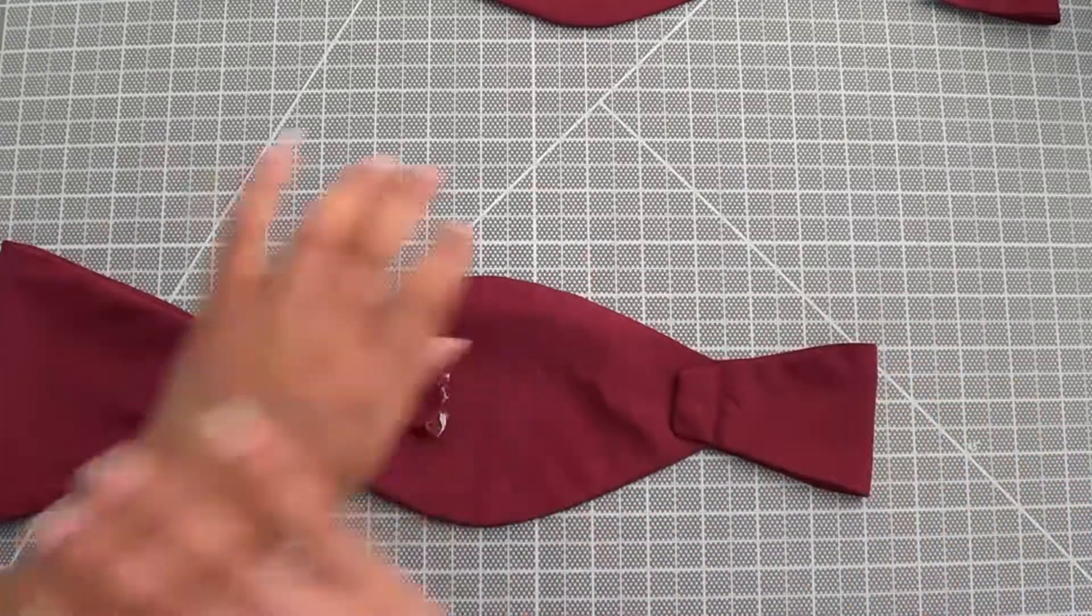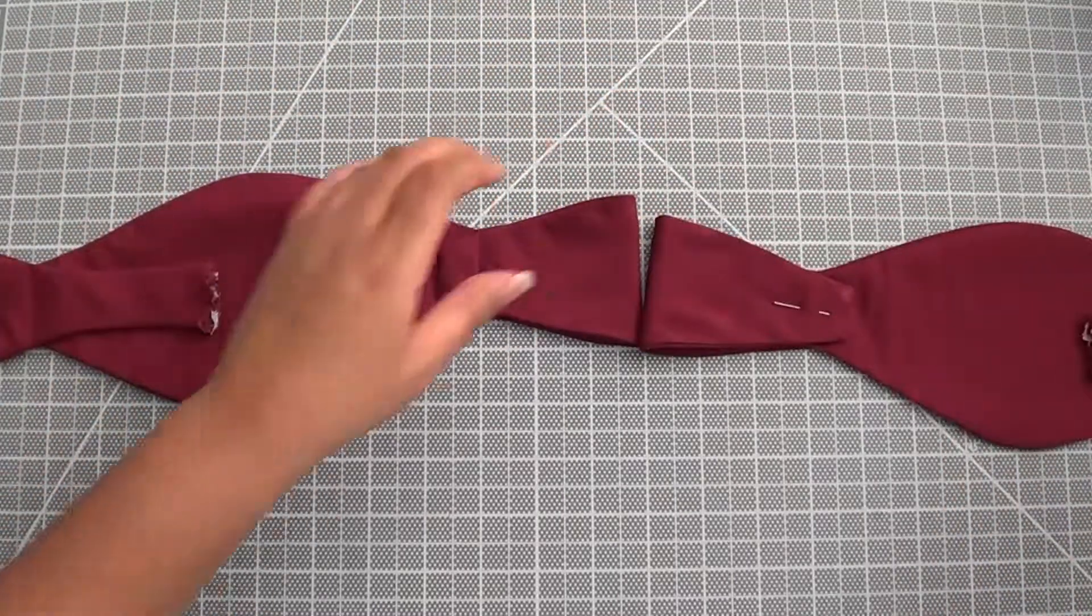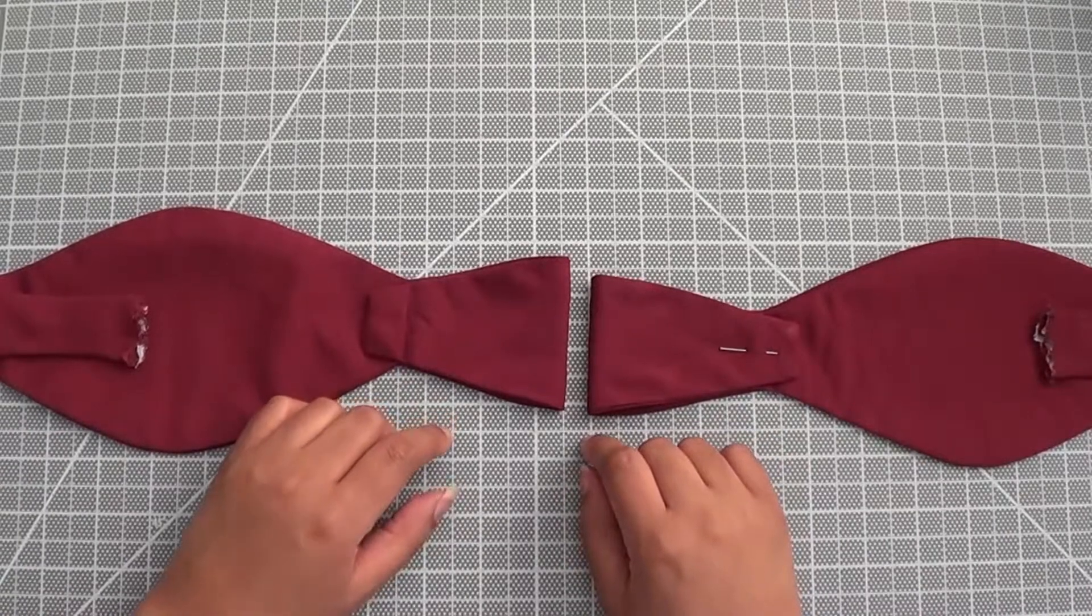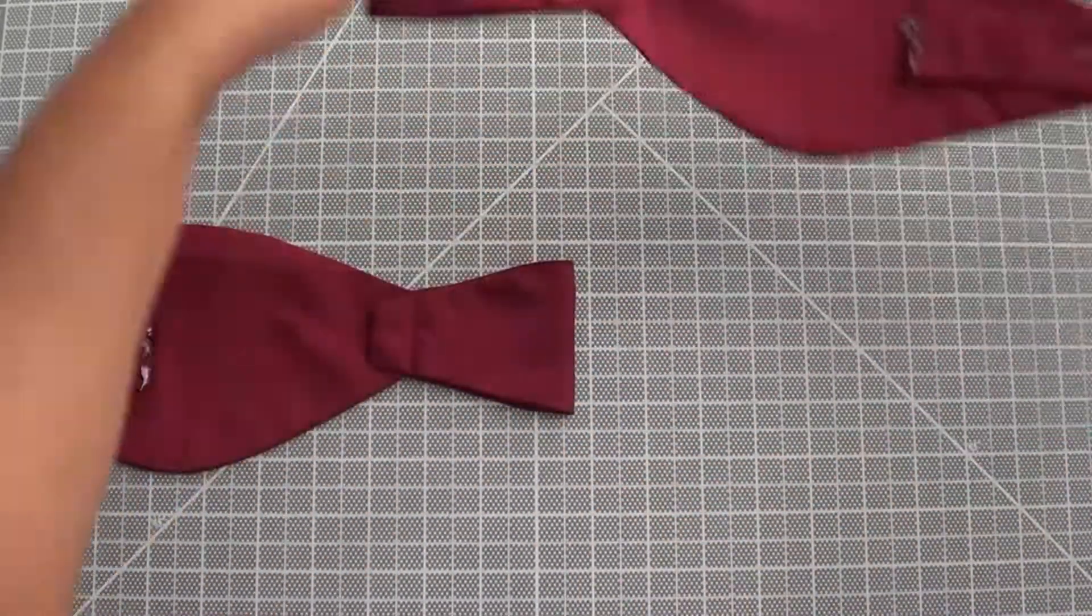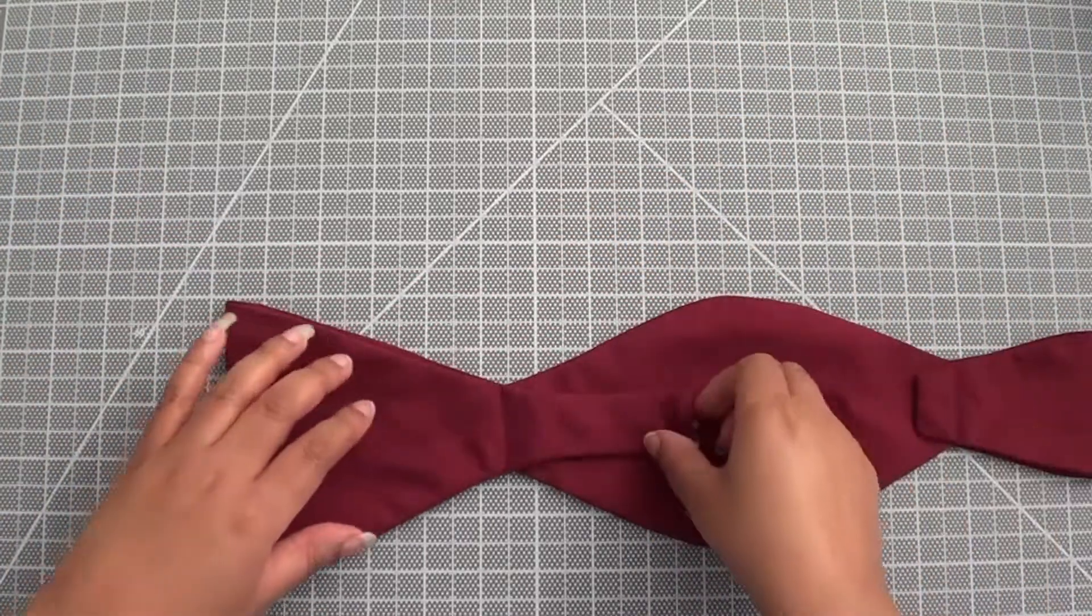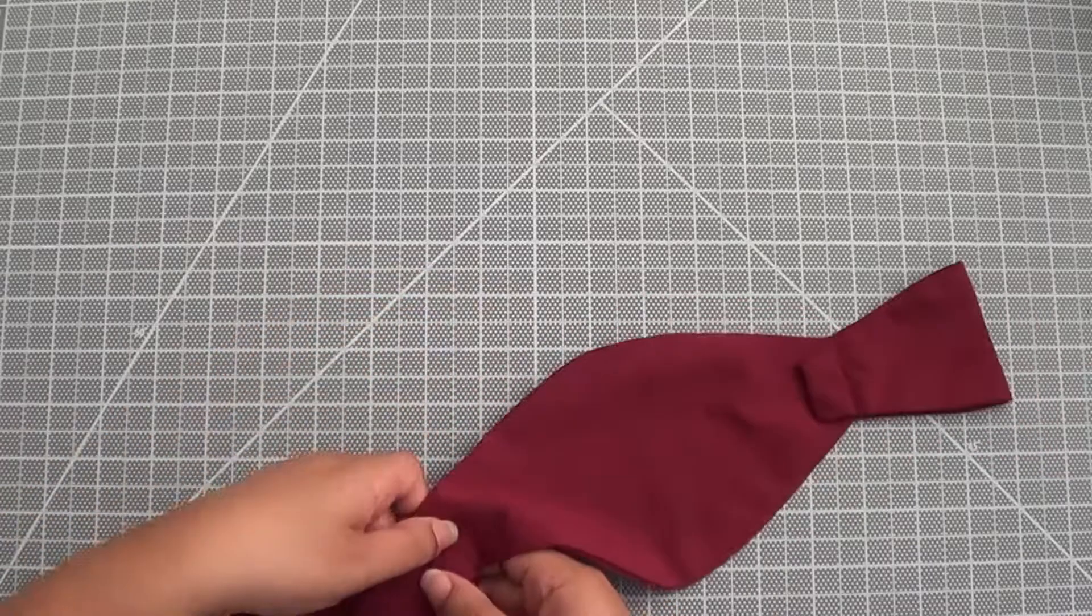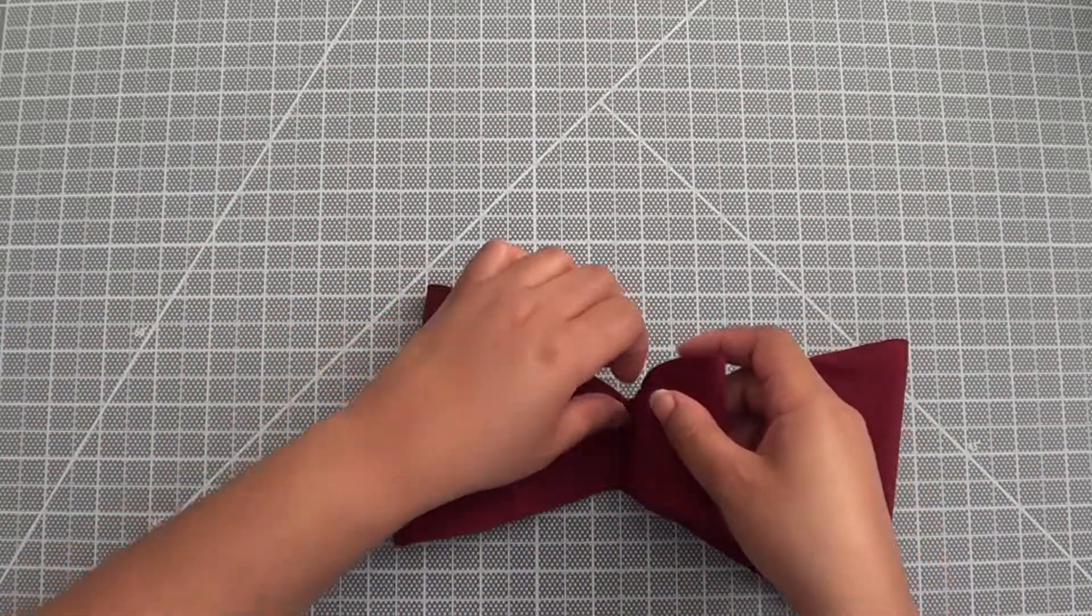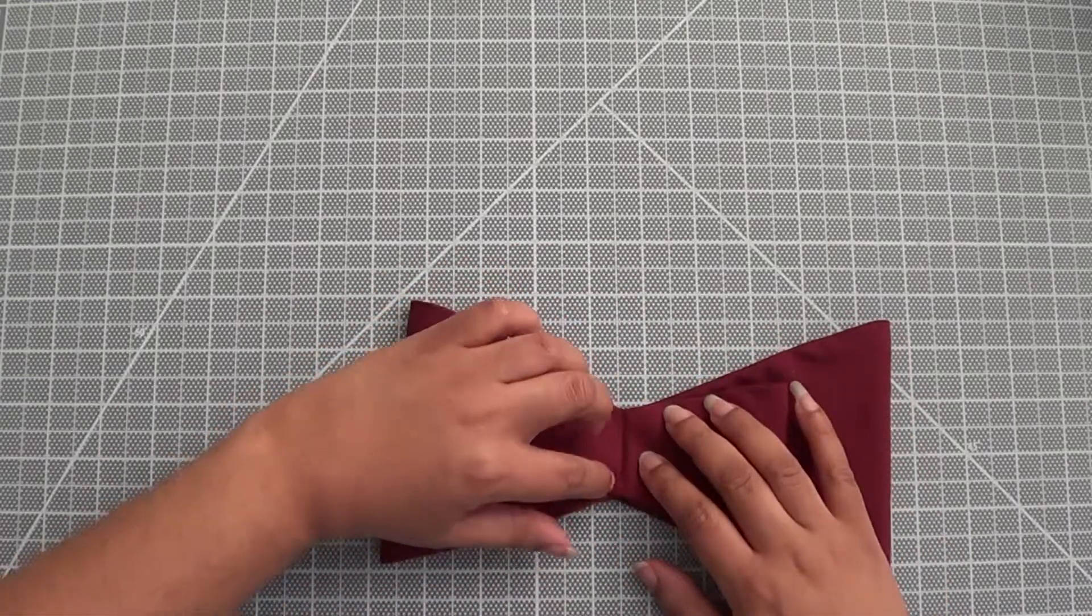But before we move further I wanted to tell you that when you are putting the tie together make sure that everything mirrors each other so that you don't accidentally make the same piece twice. So after we do this you're going to fold that back and put this here and stitch down.